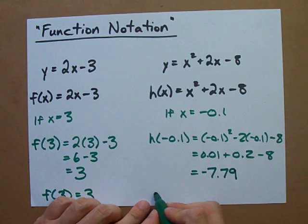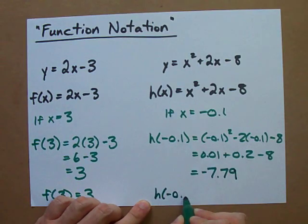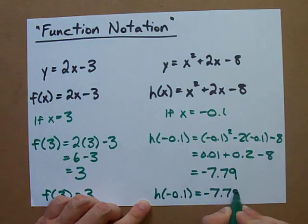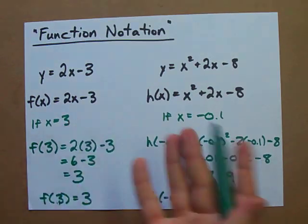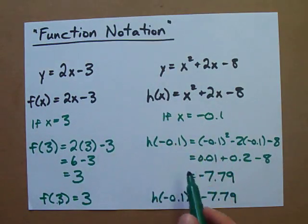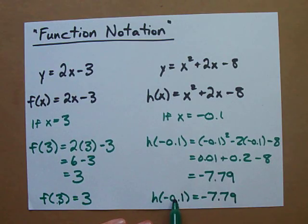And when you do all that math, it turns out to be negative 7.79, I believe. Forgive me if the math is wrong. Let me say that h of negative 0.1 is negative 7.79. See, it's the exact same thing as y, but it's telling you what x you plugged in to get it. That's the only special thing about this.